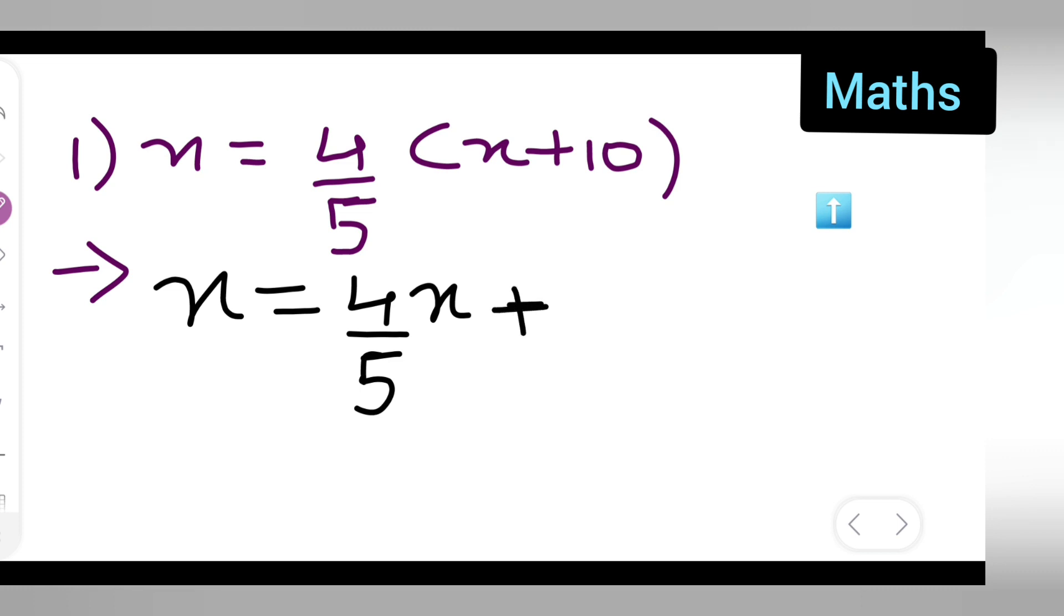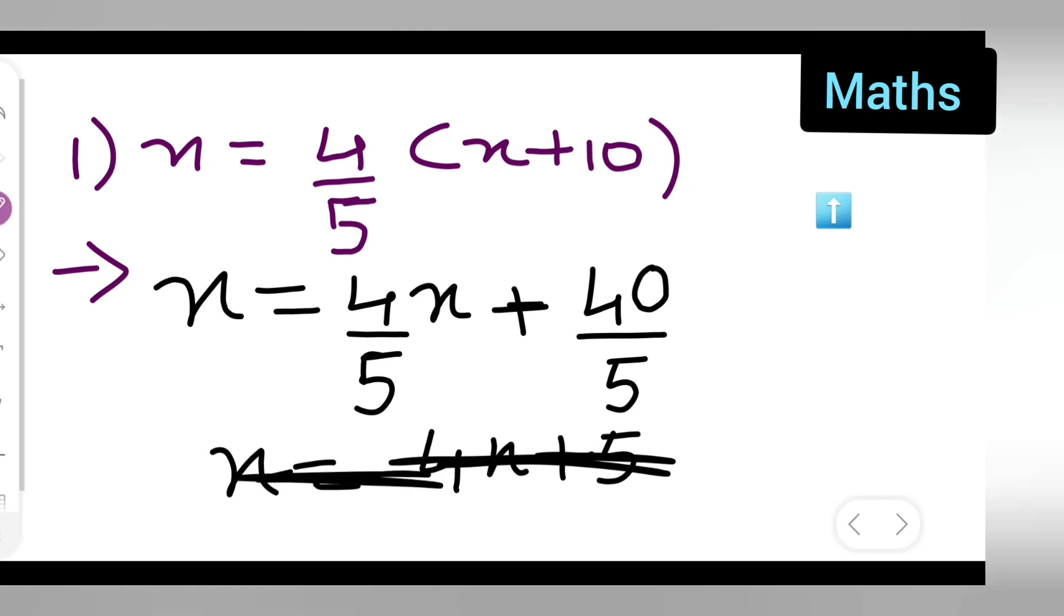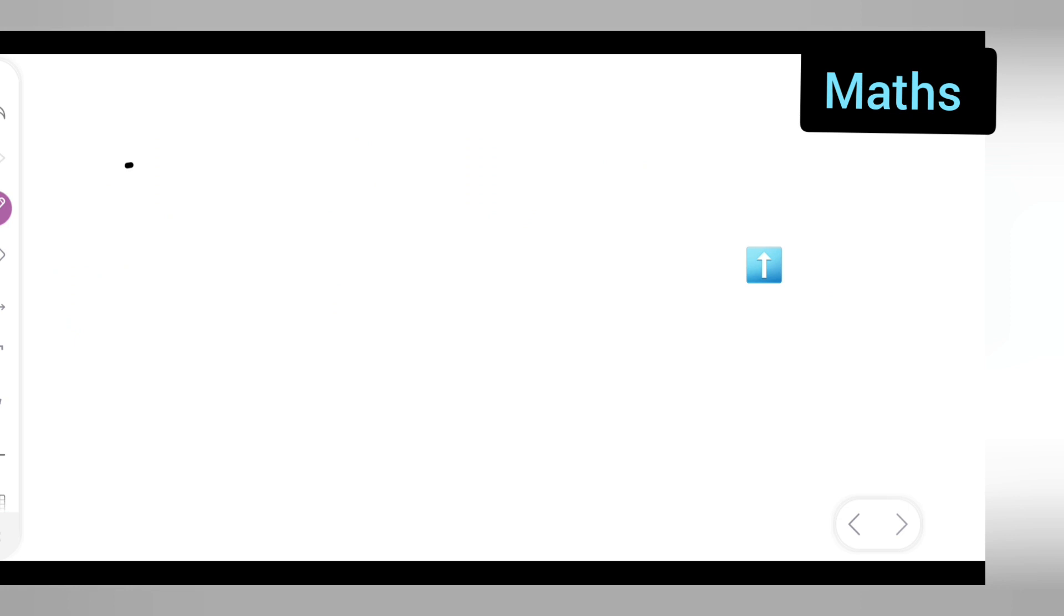4 times 10 will give 40 upon 5. So now what you all will do is write x equals 4x plus 40 upon 5. Now I'll write it better. So it is x equals 4x plus 40 upon 5, right?